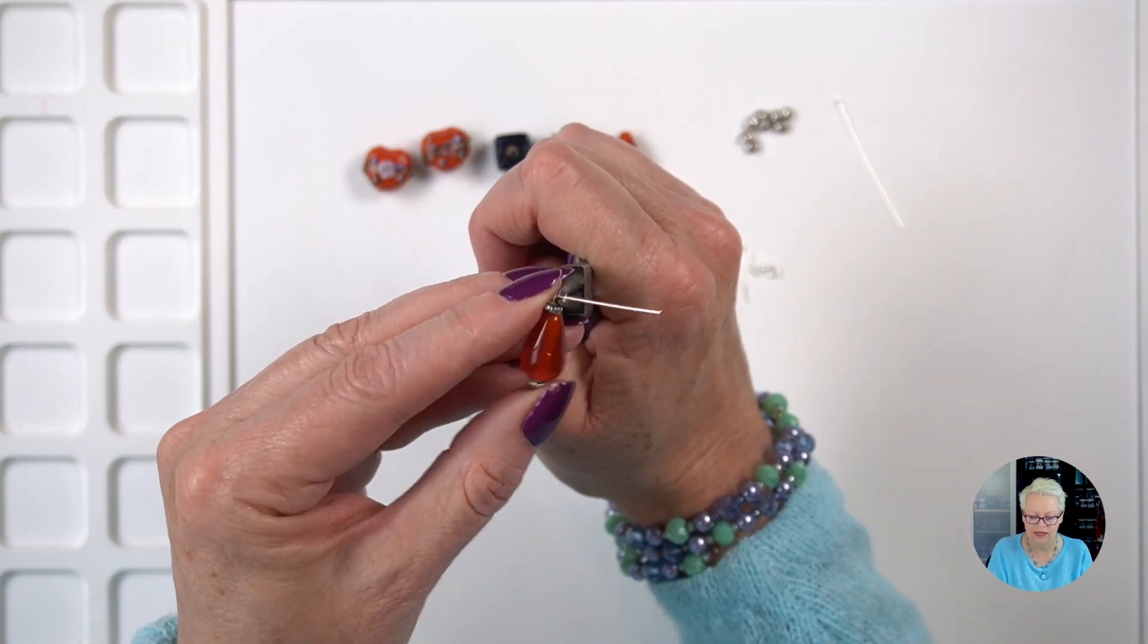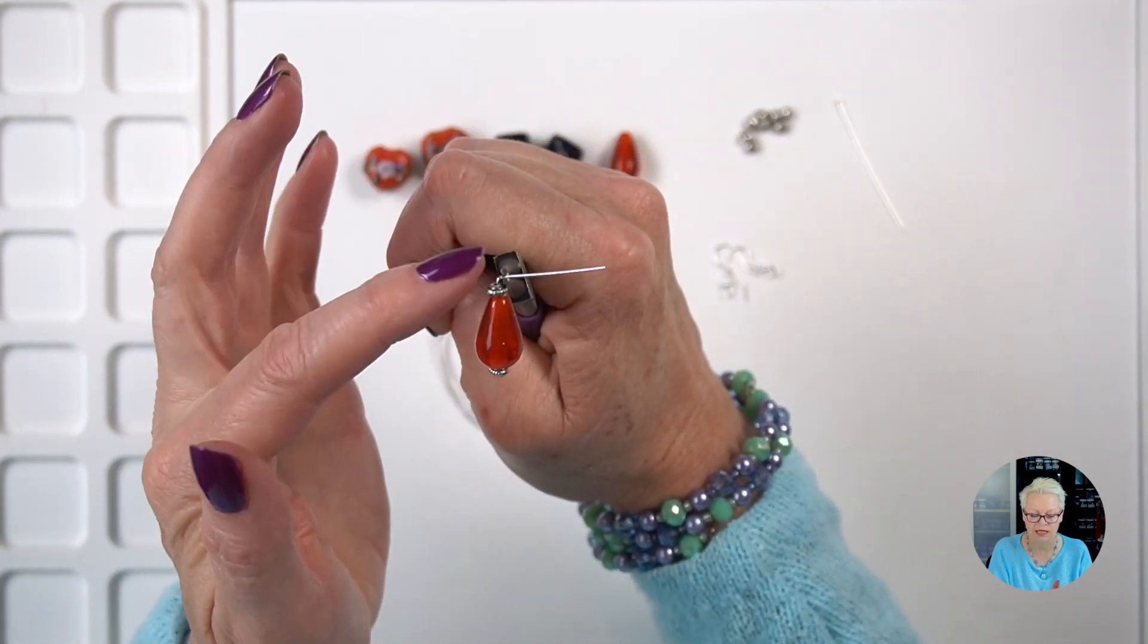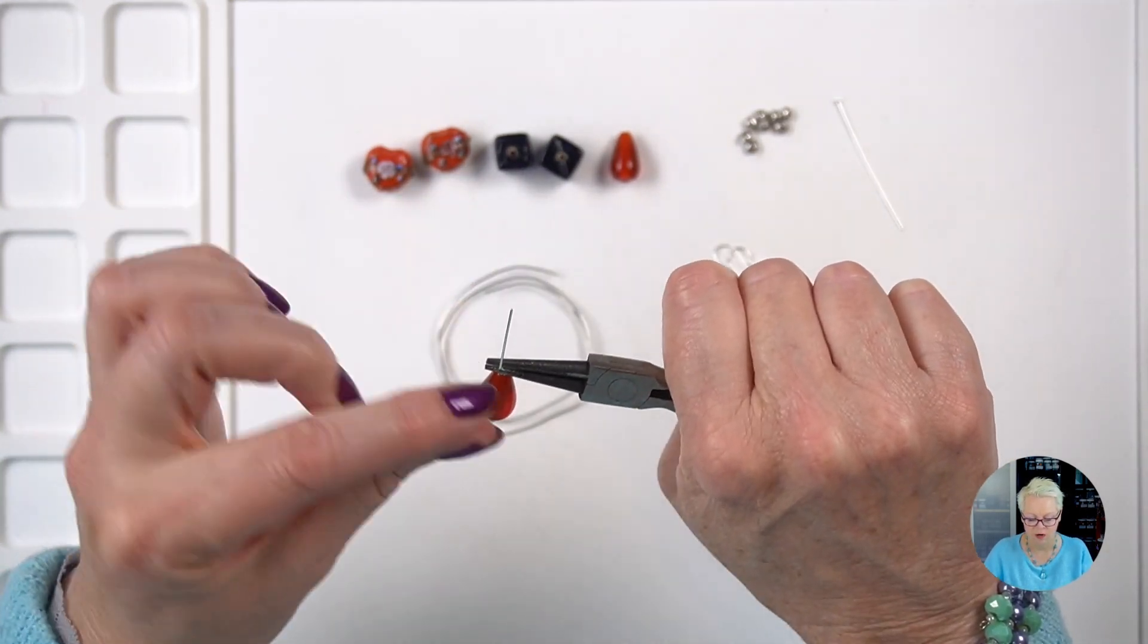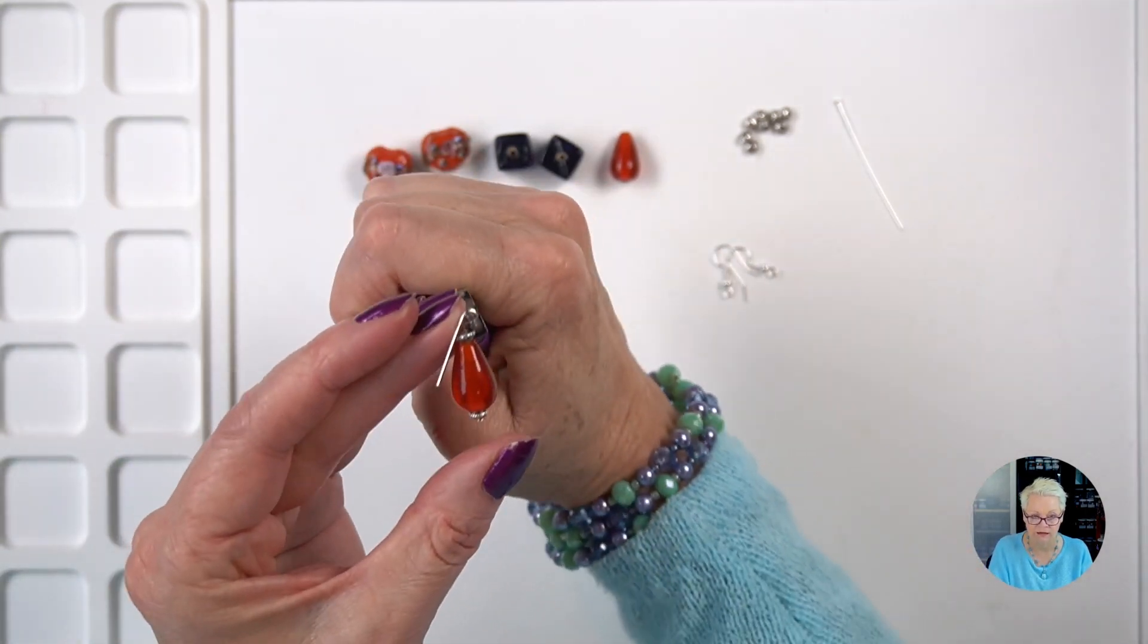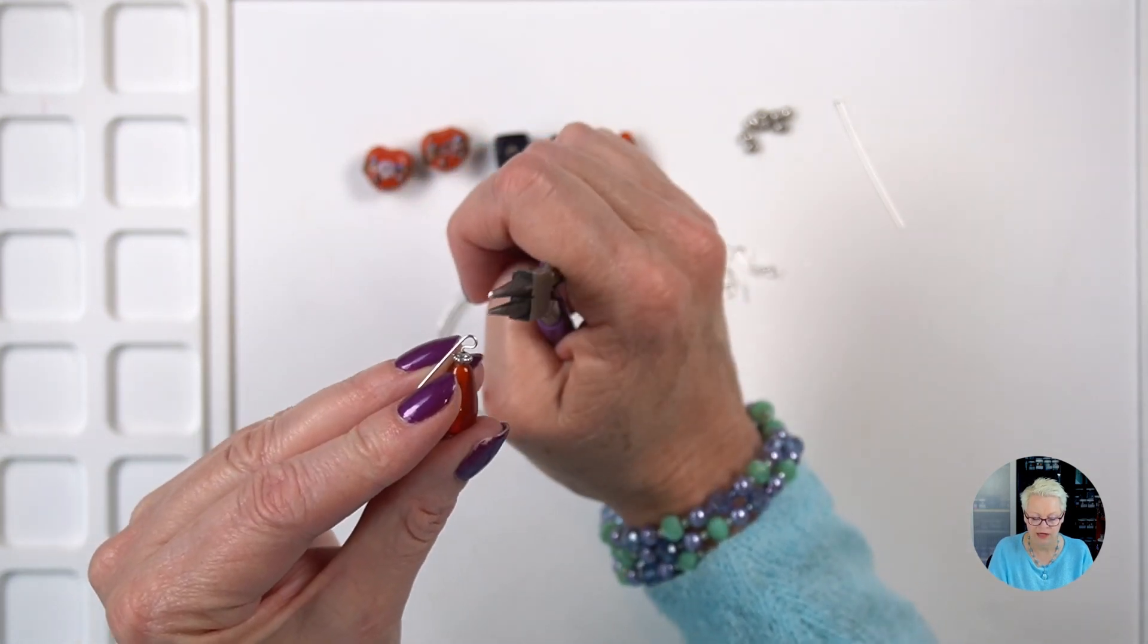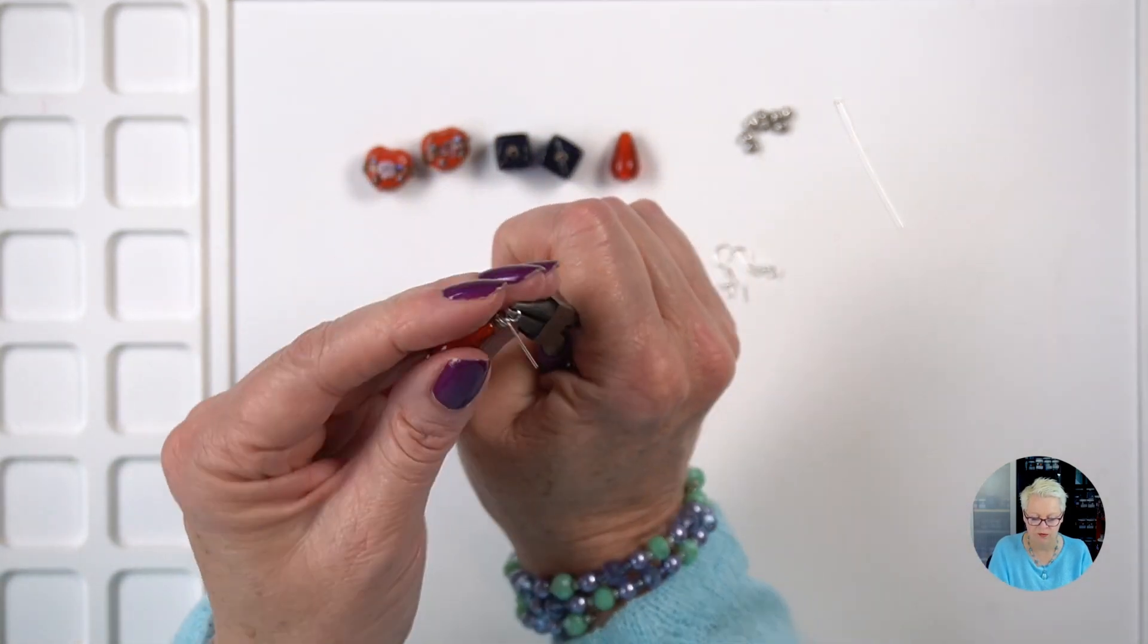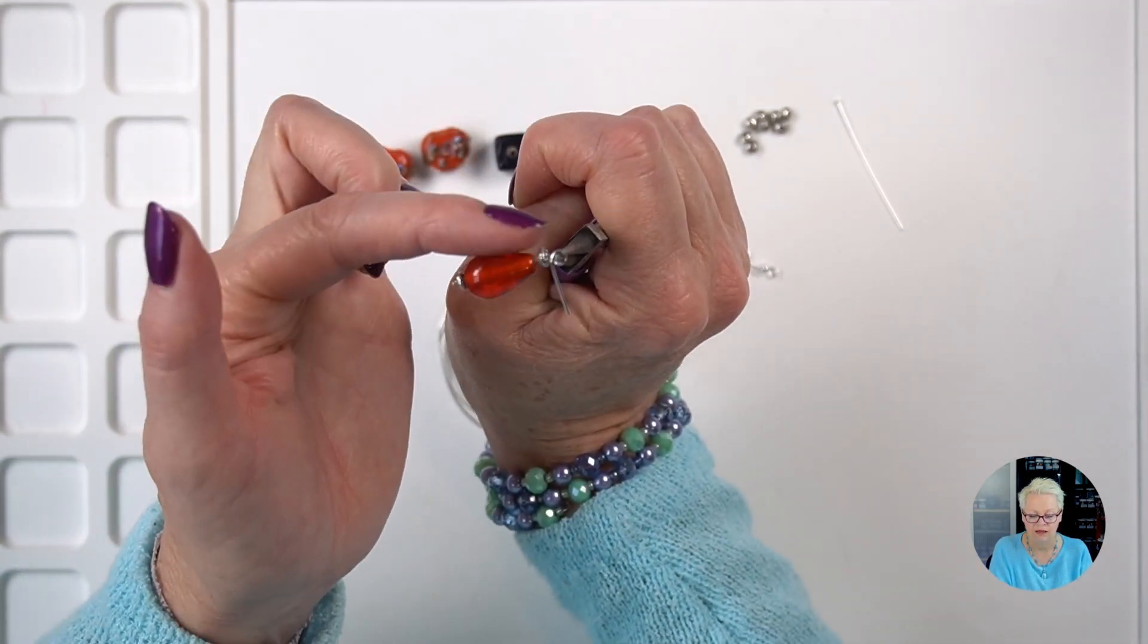And now what I'm going to do is take my round nose pliers and make a loop. So what I'm doing is I'm kind of tucking my pliers as close as I can into the corner of my bend there. And I've got the wire facing me, the end, and I'm going to push the wire away from me and around the loop or the jaw of the round nose pliers like that. Now I'm going to remove the pliers and put them back in on the bottom jaw. And then I'm going to pull that wire all the way around so that it's at a right angle to the wire coming out of the earring.